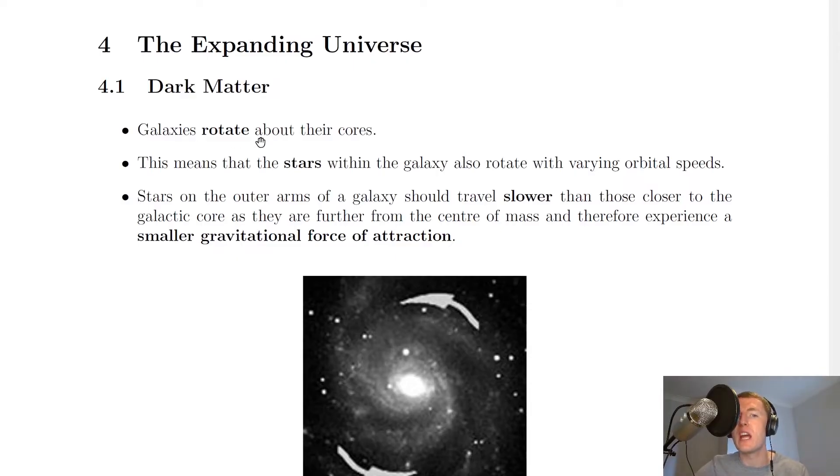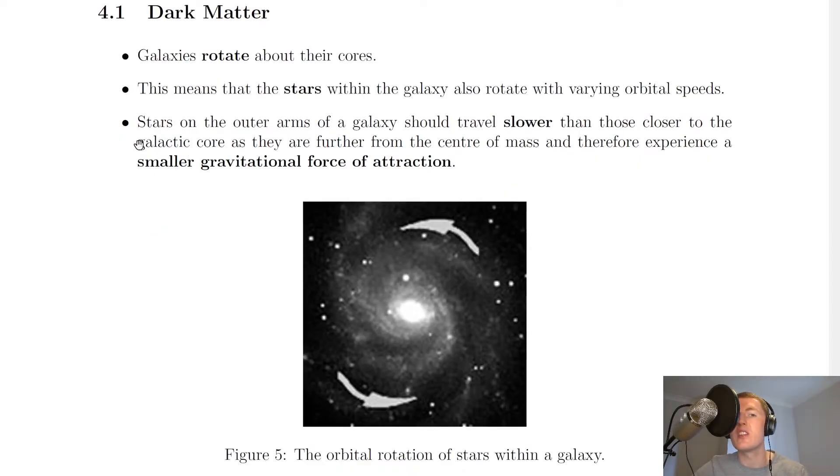So the first thing we need to be aware of is that galaxies rotate about their cores. This means that the stars within the galaxy also rotate with varying orbital speeds. And this part here is quite key to the argument.